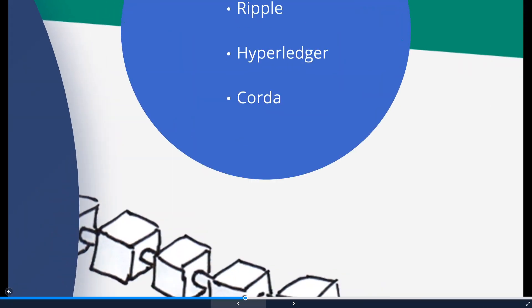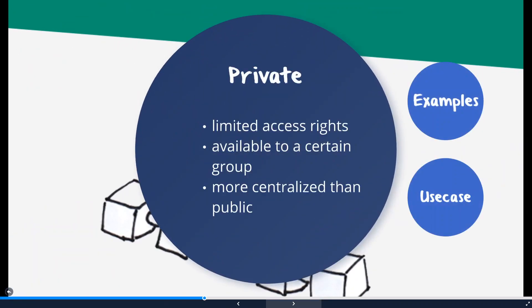Next we have the private blockchain. The private blockchain is only available to a certain group. In contrast to the public blockchain, there is one or more persons responsible for maintaining it. They determine, for example, who carries out which actions and who has access to certain data. Consensus is reached through coordination of the central responsible persons, who can grant or withdraw mining rights for users within the network, for example when using proof of work.